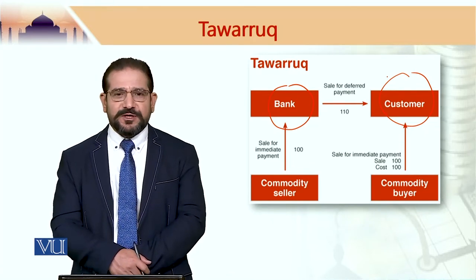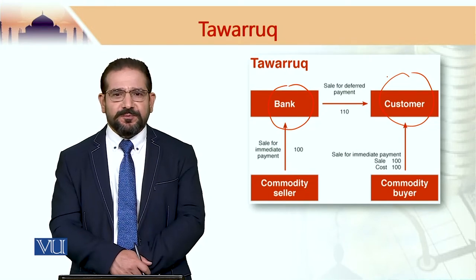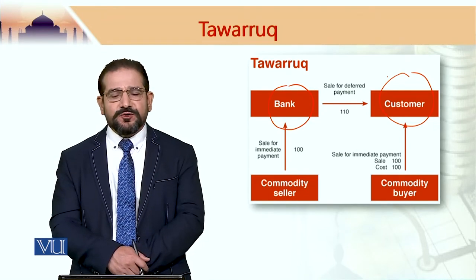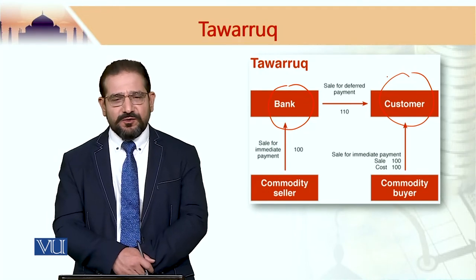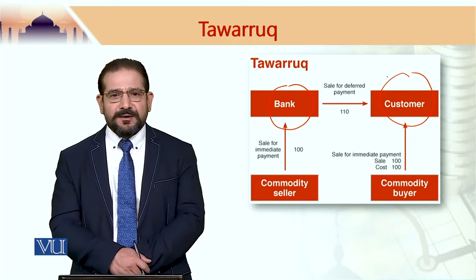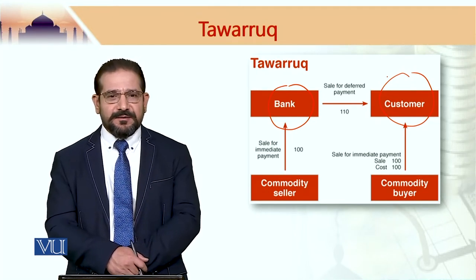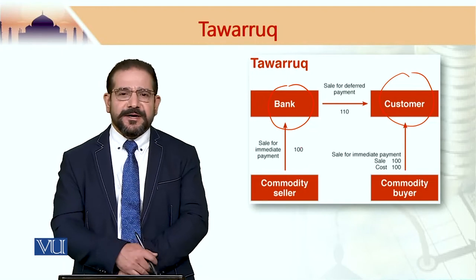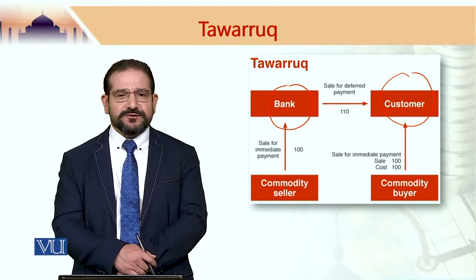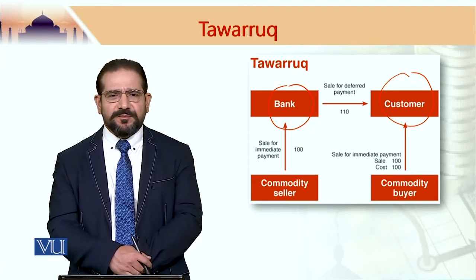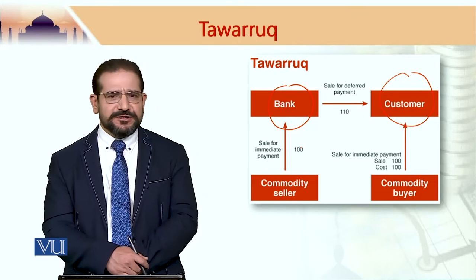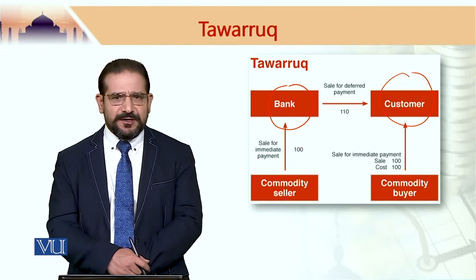کچھ لوگ اس کو حیلے کے طور پر بھی لیتے ہیں۔ So Tawarruq میں کیا ہوتا ہے؟ Tawarruq میں bank بازار سے ایک commodity خریدتا ہے۔ This could be wheat, this could be aluminum, or any Sharia-compliant commodity.